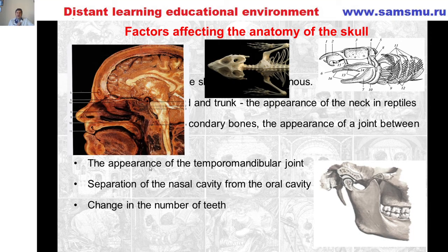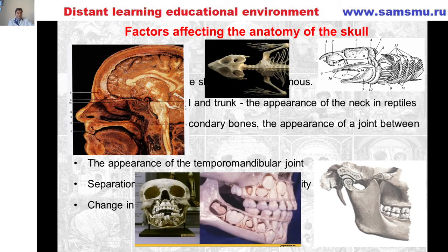The next part of evolution is separation of the nasal cavity from the oral cavity, and formation of the palate between them. Also, this involves the change in the number of teeth — a reduction in number — and two generations of teeth. The human has two generations of teeth: deciduous teeth (dentus decidui) is the first generation, and permanent teeth is the second part of teeth ontogenesis.